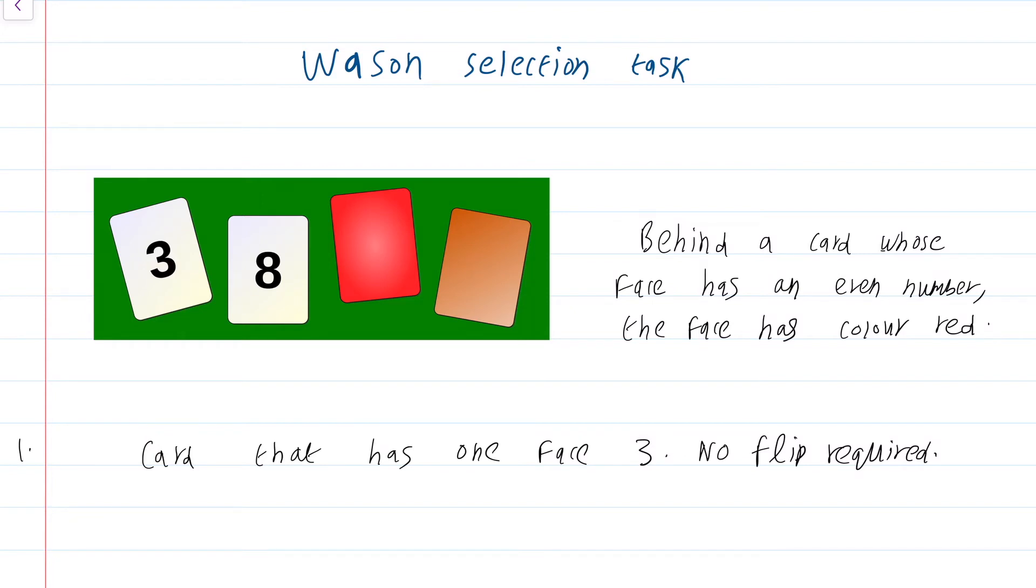That means the assertion, the proposition is purely about those cards which have one face even number. The card that has face 3 is not an even number. Therefore, it does not matter what colour is opposite this face. It is completely irrelevant to the truth of the given proposition.